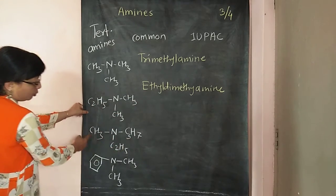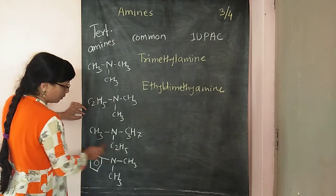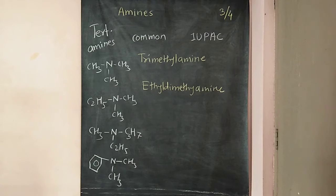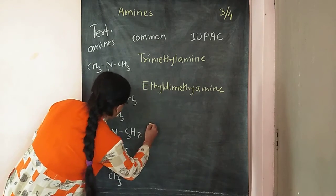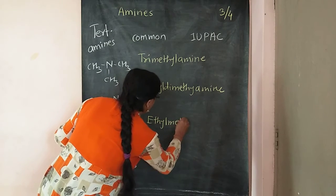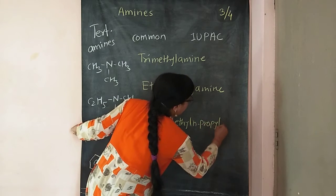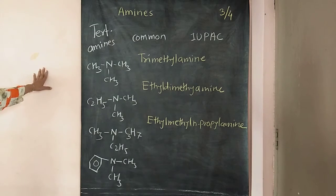Next, three different groups are present: the isopropyl group, the ethyl group, and the methyl group. Again we use alphabetical order preference. So first we write ethyl, then methyl, then isopropyl. The name is ethyl methyl isopropyl amine.